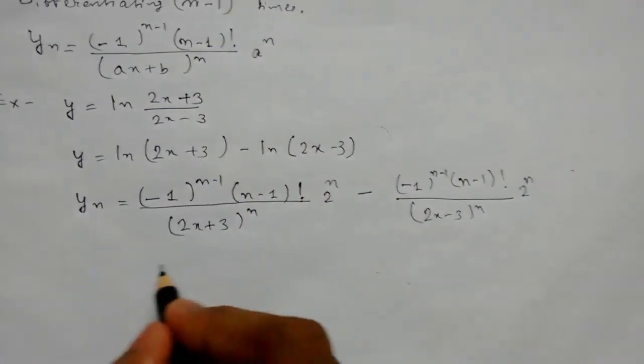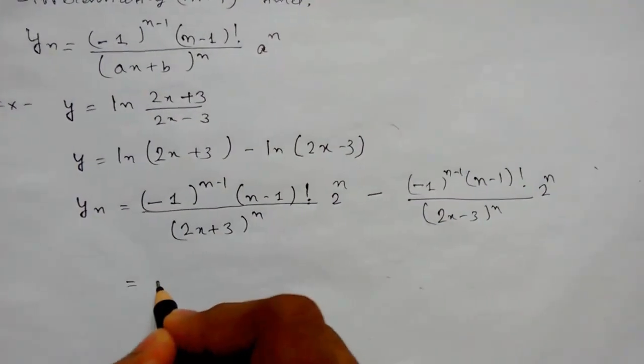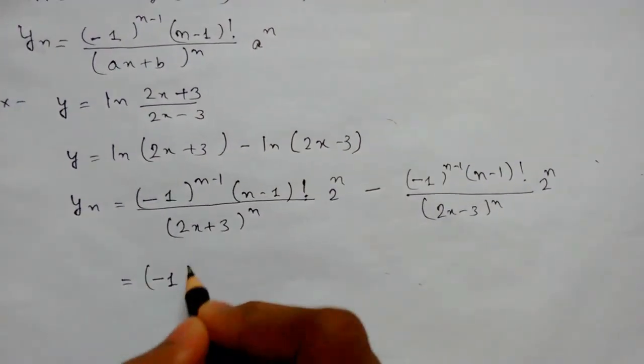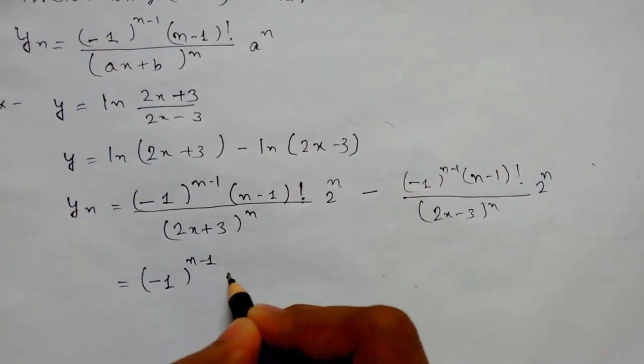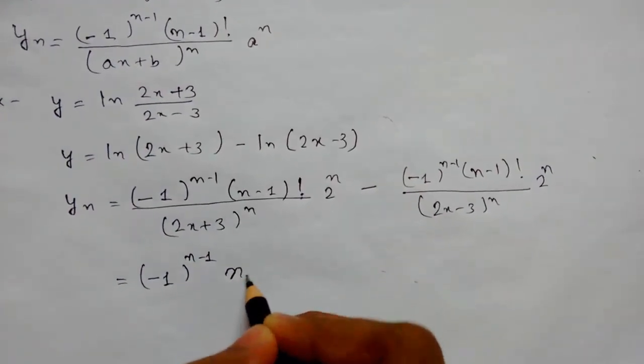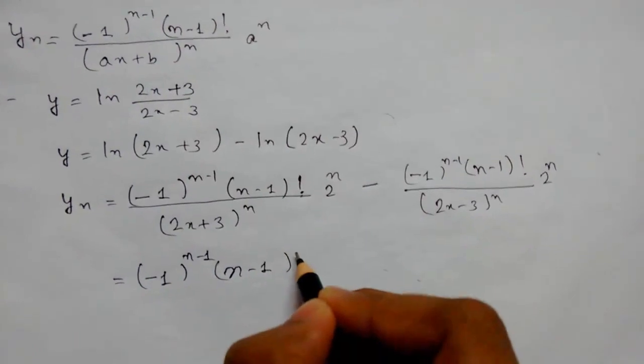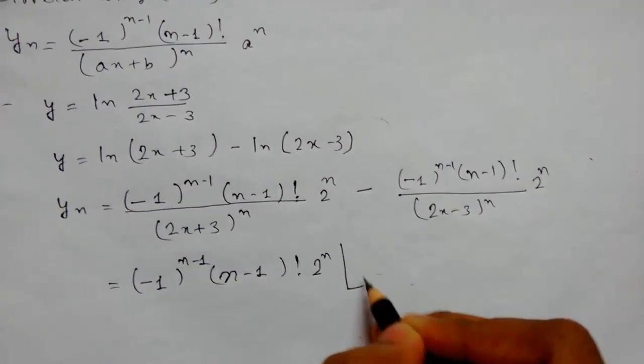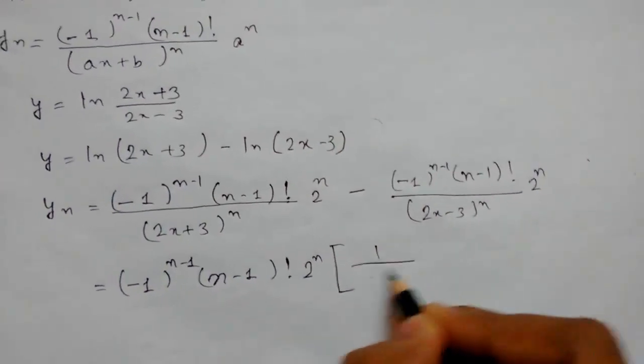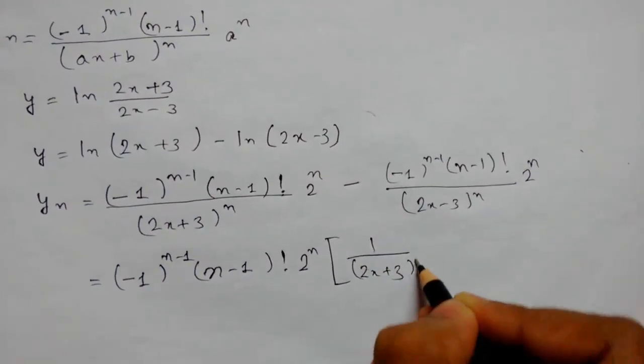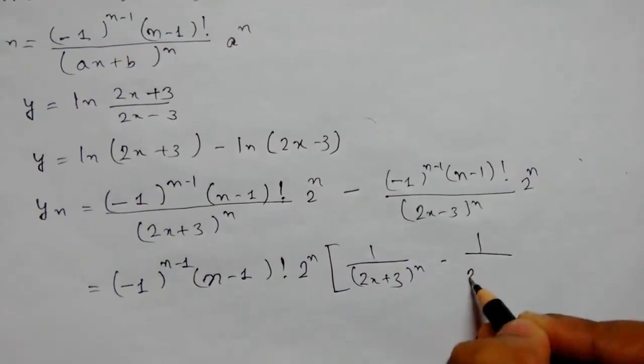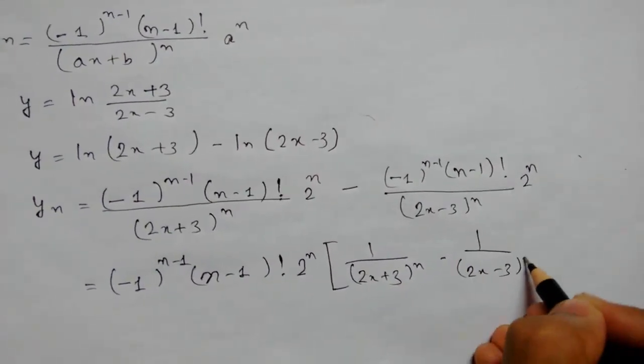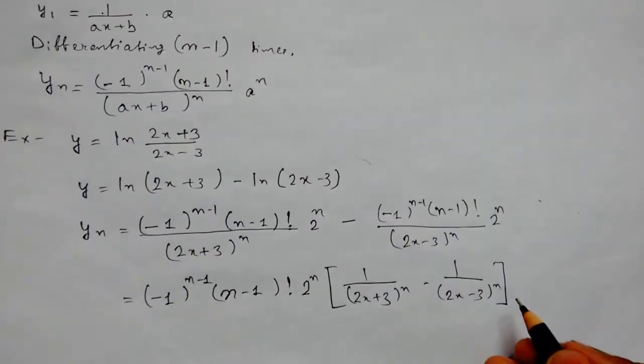Let me simplify this. This will be (-1)^(n-1) times (n-1)! times 2^n taken common, so it will be 1 over (2x+3)^n minus 1 over (2x-3)^n.